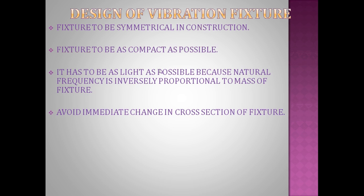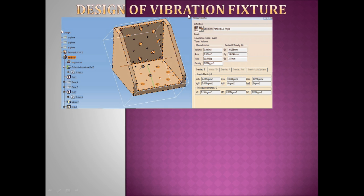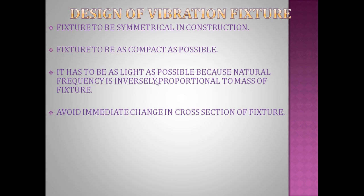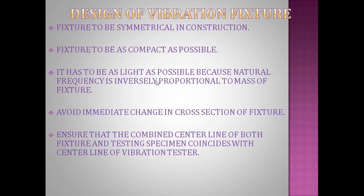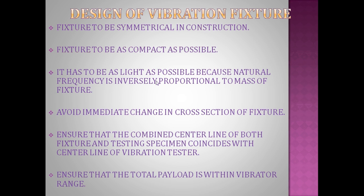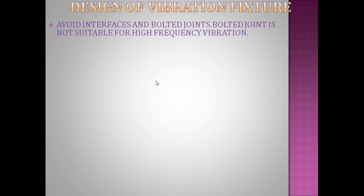Third, avoid immediate changes in cross-section of the fixture — changes should be gradual, not abrupt, to avoid stress concentration. Fourth, ensure that the combined center line of both the fixture and the test specimen coincides with, or is very close to, the center line of the vibration tester; otherwise it will lead to resonance. Fifth, ensure that the total payload is within the vibrator's range.